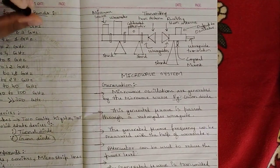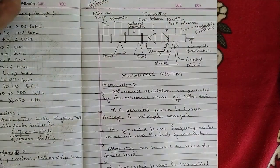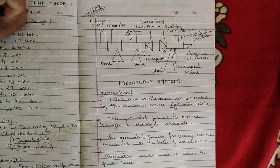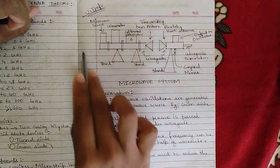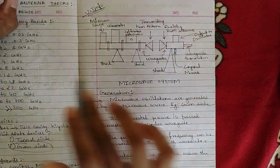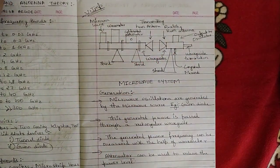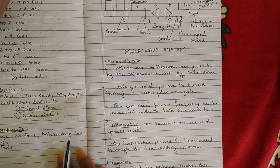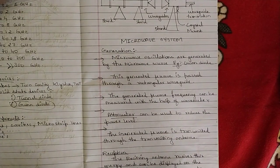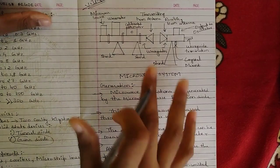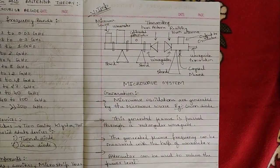The Microwave System is a sure question from this module and a very important question from the VTU exam point of view, as it has been asked multiple times. For this question, you should draw one simple neat diagram of the microwave system using a pencil or pen with a scale, so that each and every component is highlighted and marked carefully. If you write the diagram, construction, generation, and reception clearly, you can easily score 7 to 8 marks.